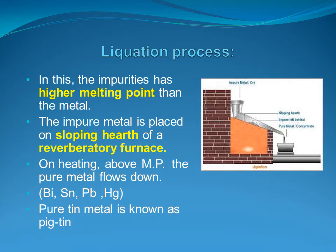Bismuth, tin, lead, and mercury are separated from their crude form by liquation. The pure tin metal that is obtained by this method is known as pig tin.